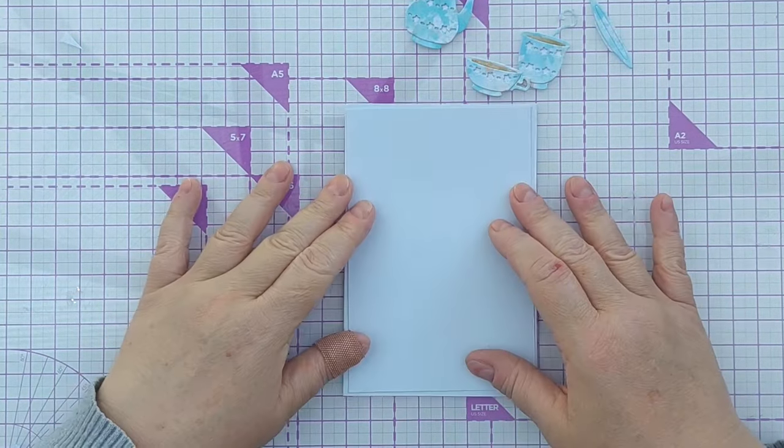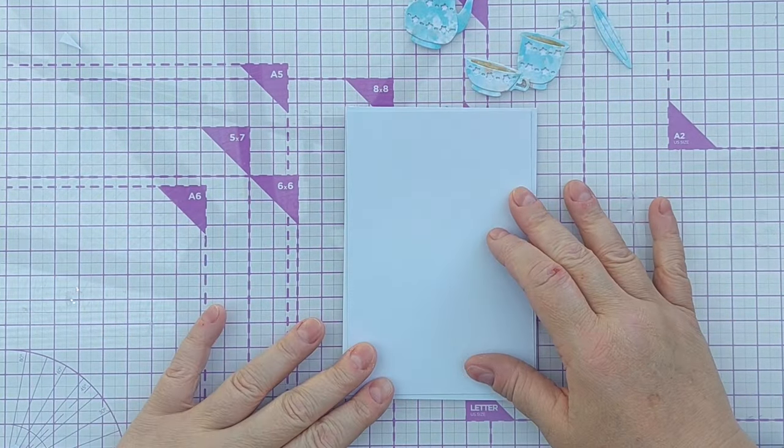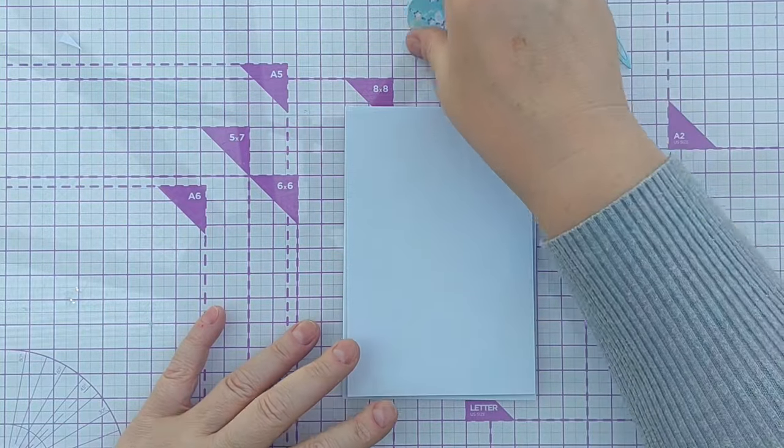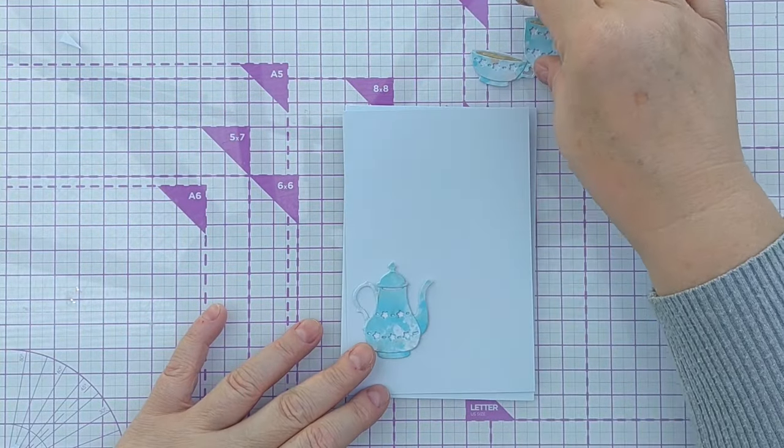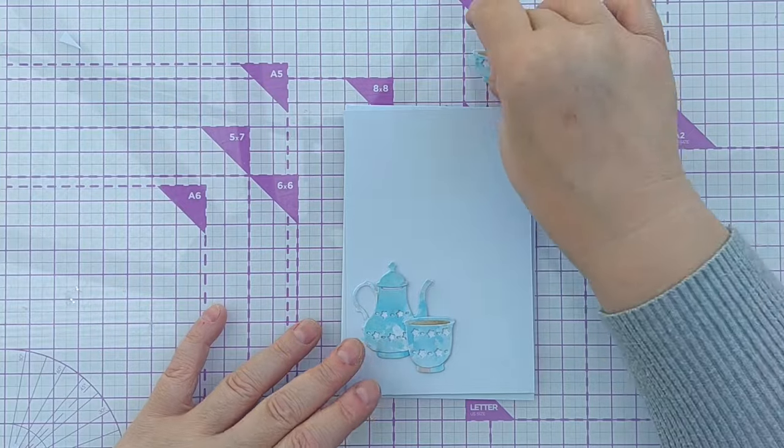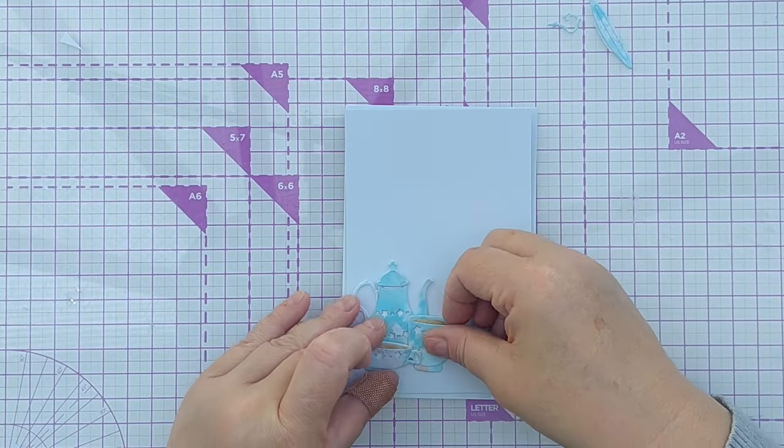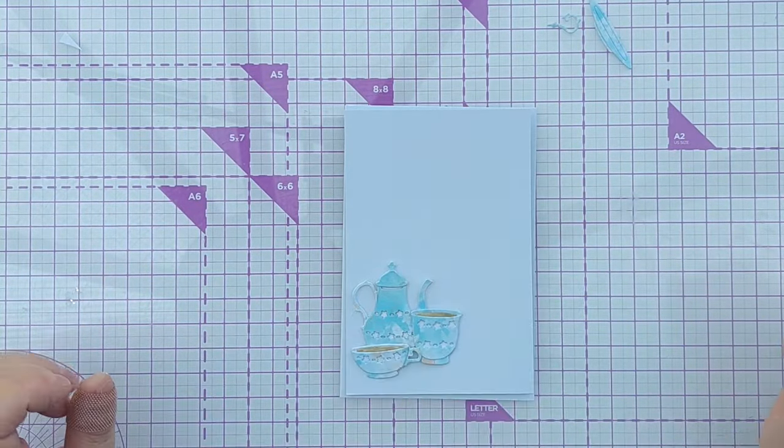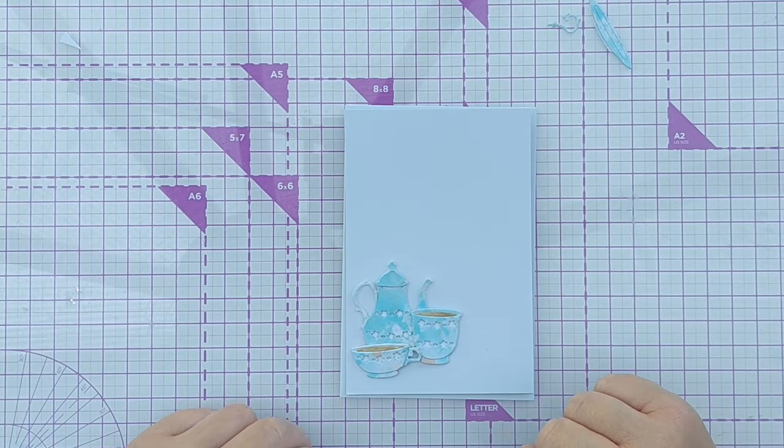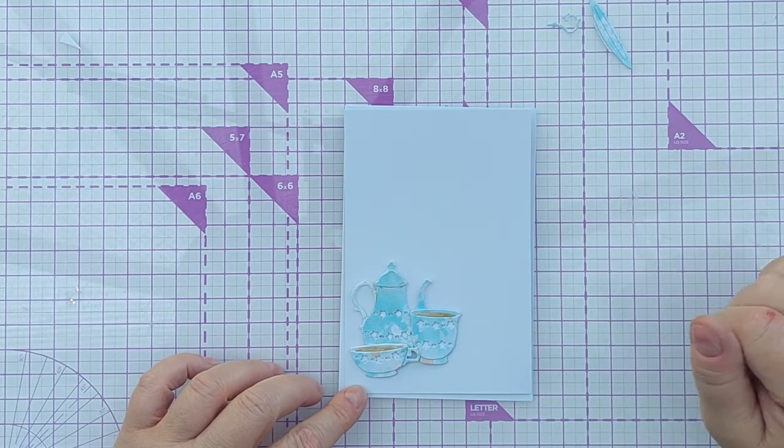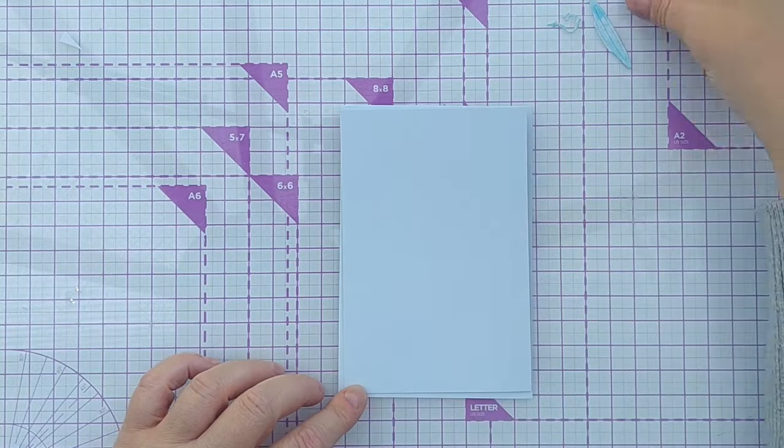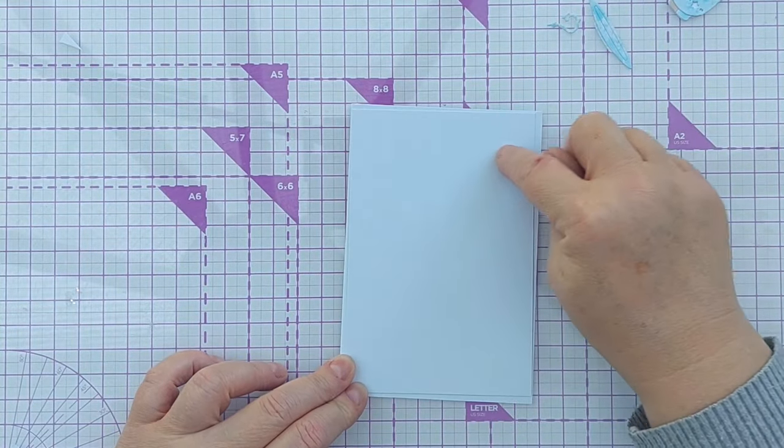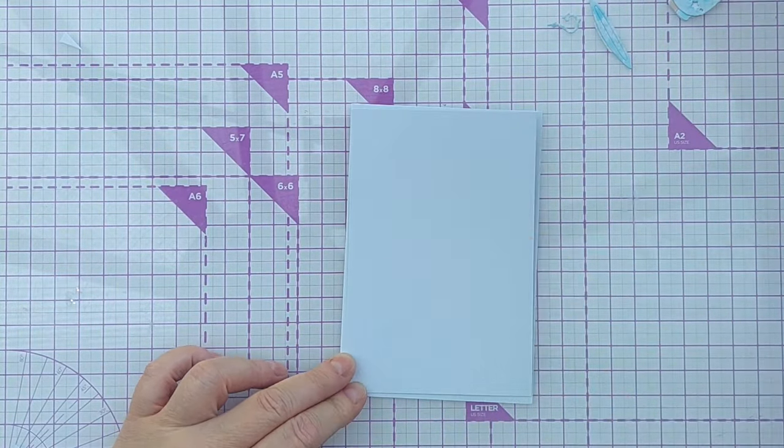My card blank is going to be four by six inches. Smooth white cardstock with a white panel on top. And I'm thinking of having my cups and teapot down here like this. So I want something for them to sit on I think. And I think I'll have the sentiment up here to get a diagonal design.